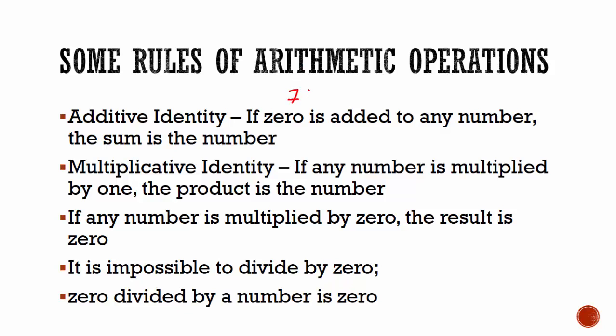So, 7 plus 0 is equal to 7. Similarly, 100 plus 0 is equal to 100.